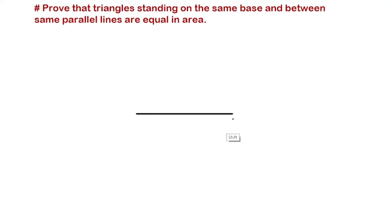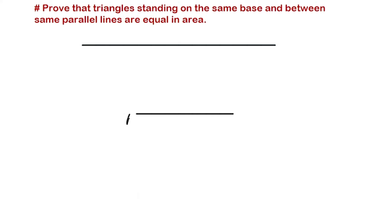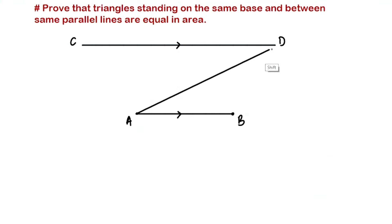First let's make a line, then another line which is parallel to this line. Let's name this line AB and this line CD. These two lines are parallel to each other. Now we are going to make a triangle on this base AB. We have our triangle ABD standing on the base AB, between the parallel lines CD and AB.